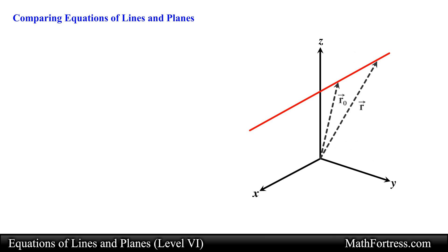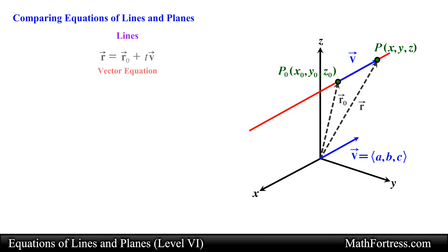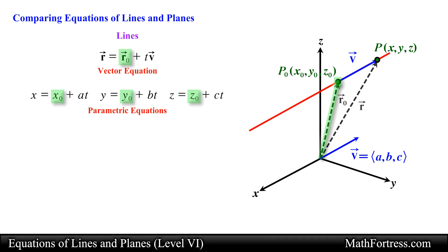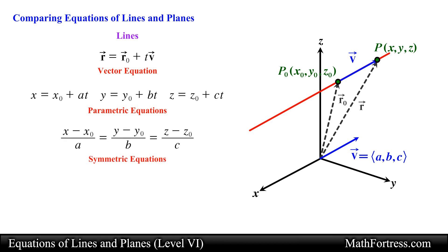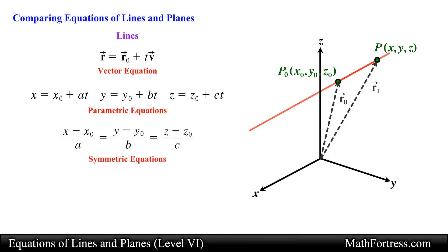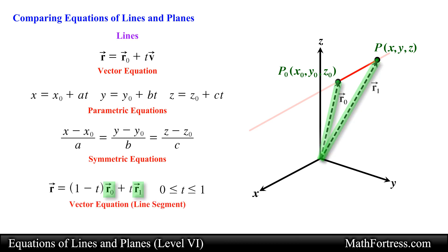Let's first quickly review how to describe a line in space. The first way is by using either vector or parametric equations. These equations require you to know an initial point on the line and a direction vector parallel to the line. The second way is by using the symmetric equations. The third way describes a line segment in space using a two-point vector equation with a parameter that ranges from 0 to 1 inclusive.